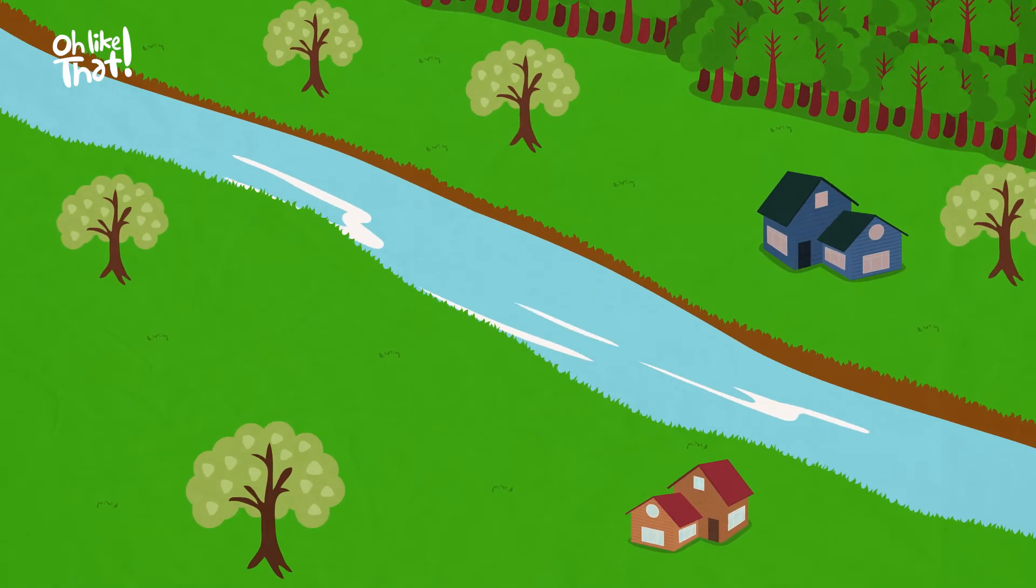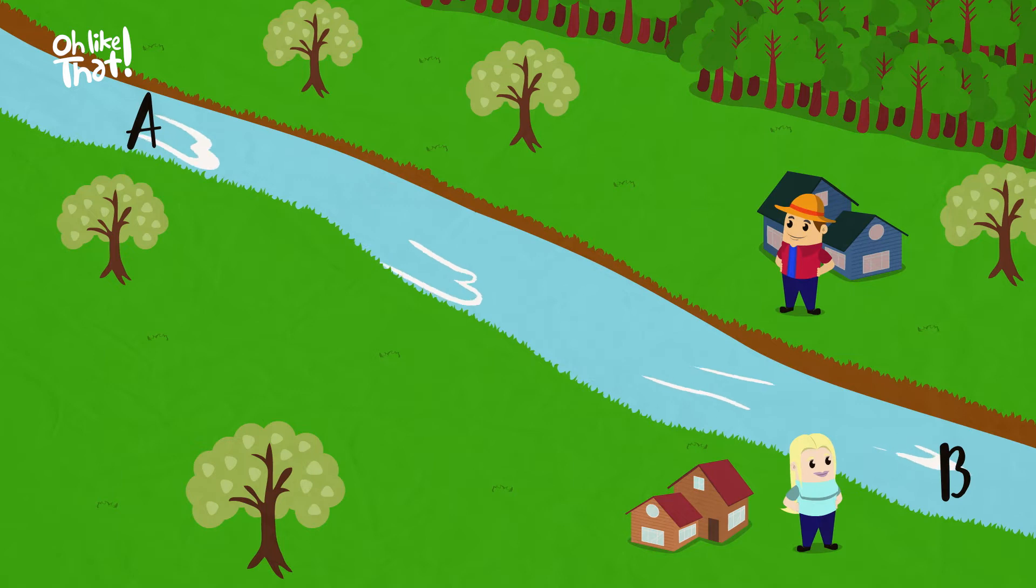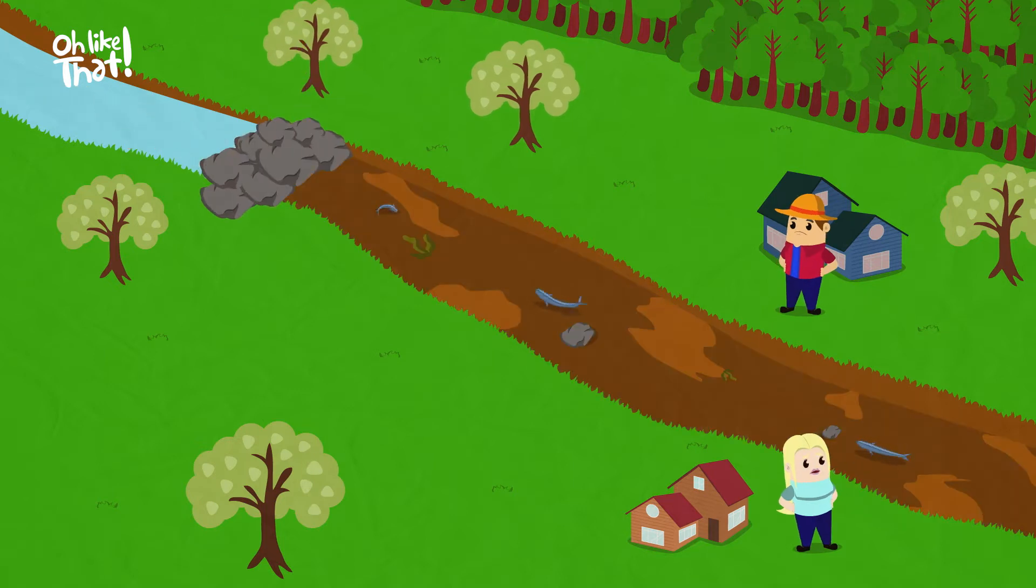Imagine two rivers. River 1 flows directly from point A to point B. Anna and John have homes along the river. If river 1 gets clogged, Anna and John will not receive water.